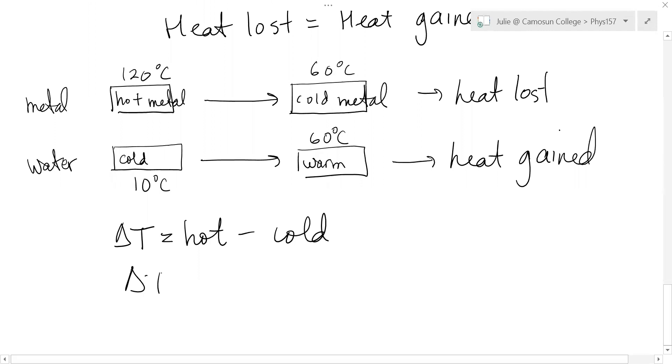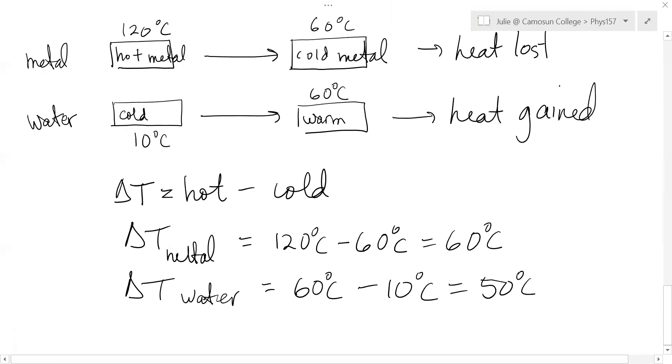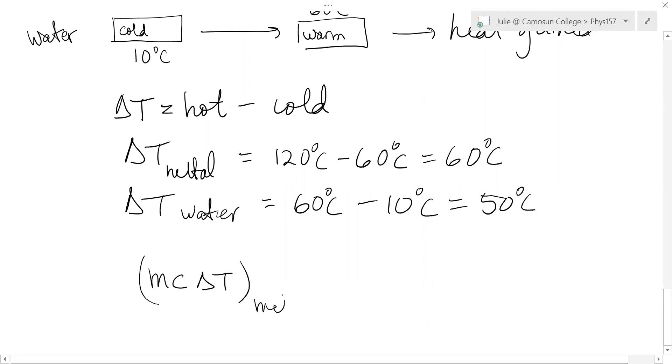If you're going to do the delta T for the metal, hot minus cold, 120 minus 60. The delta T for the metal is 60. If you're going to do the water, hot minus cold, 60 minus 10. Delta T is 50. Then you just make sure you do the MC delta T for the metal on the opposite side of the equation to the MC delta T for the water. Everything is positive. You can solve for whatever you need to solve for. That's how calorimetry problems work.